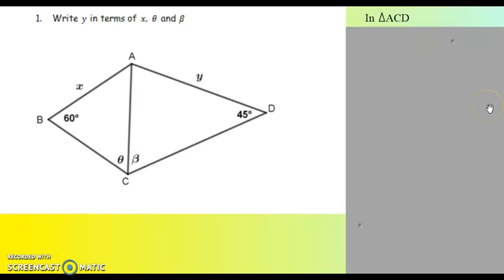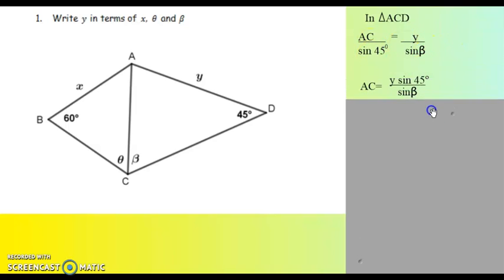I start with triangle ACD and I say here, side AC over sine 45 will be equal to side y over sine of beta. Then I write AC as the subject of this equation. So AC will be equal to sine 45 times y over sine of beta.